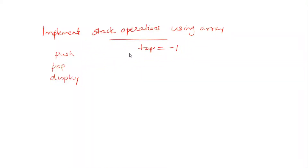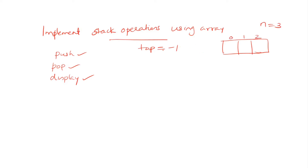In this video we are going to see the implementation of stack operations using an array. We are considering three main operations: push, top, and display. Initially the stack has a size of three, and there is a pointer called top whose initial value is minus one. When we insert a new element, top is incremented by one and points to index zero where the value is inserted — that is the push operation.